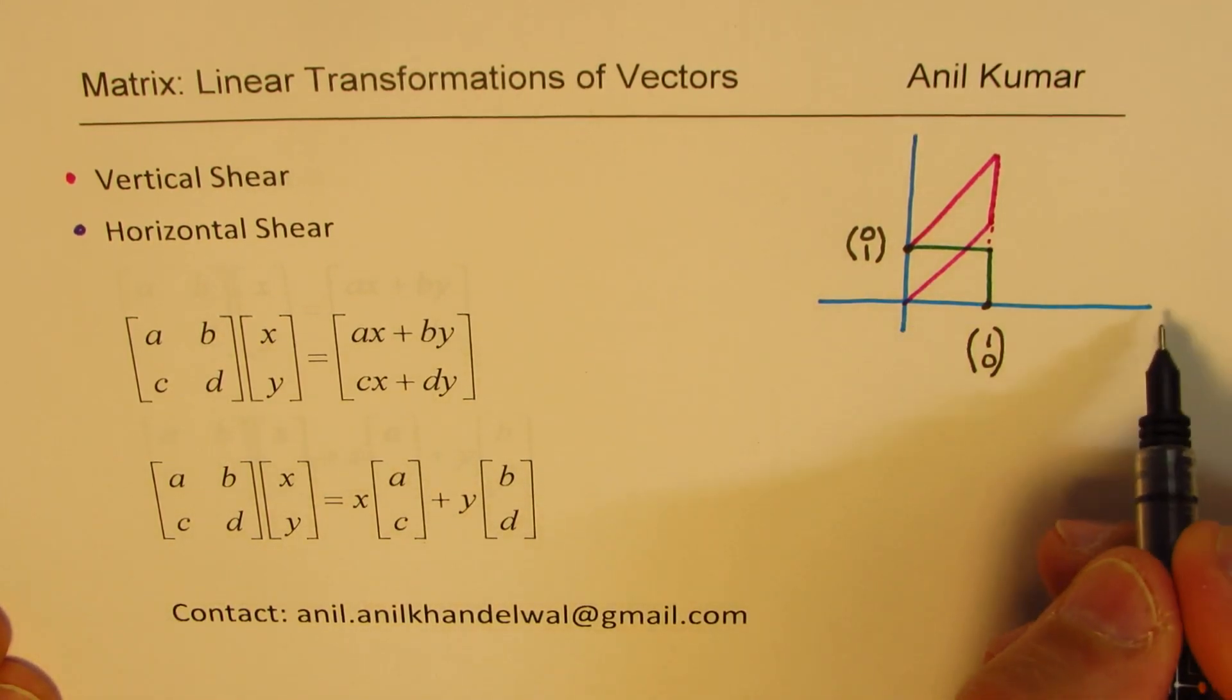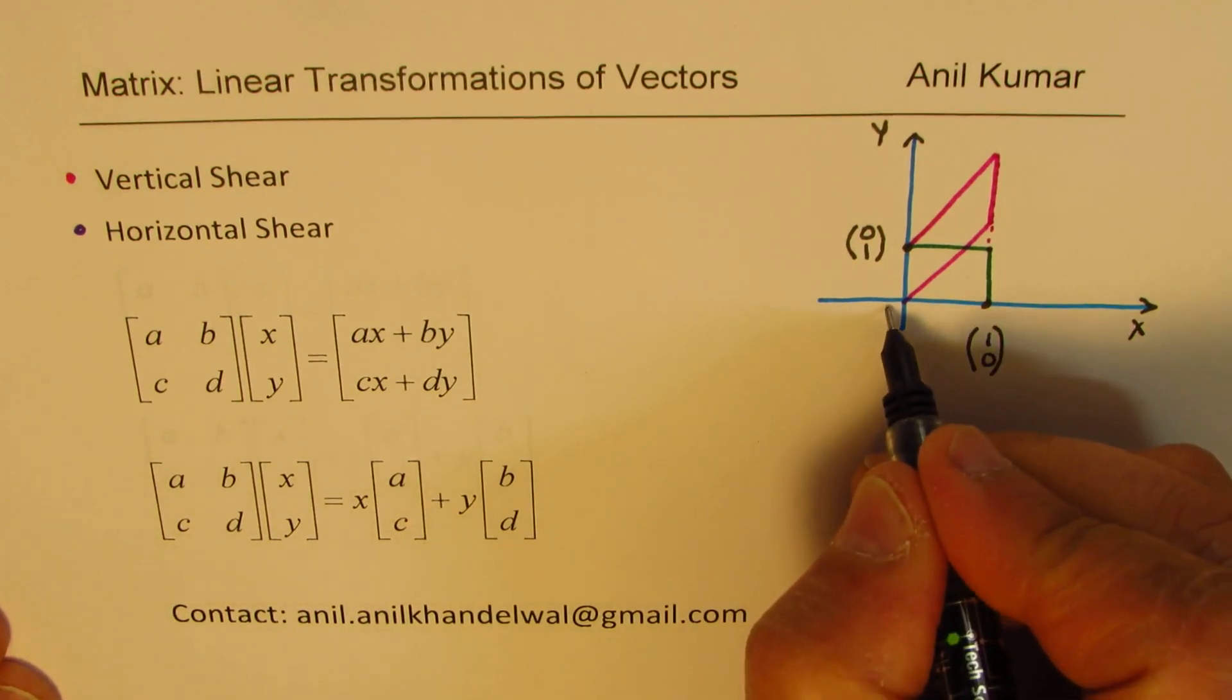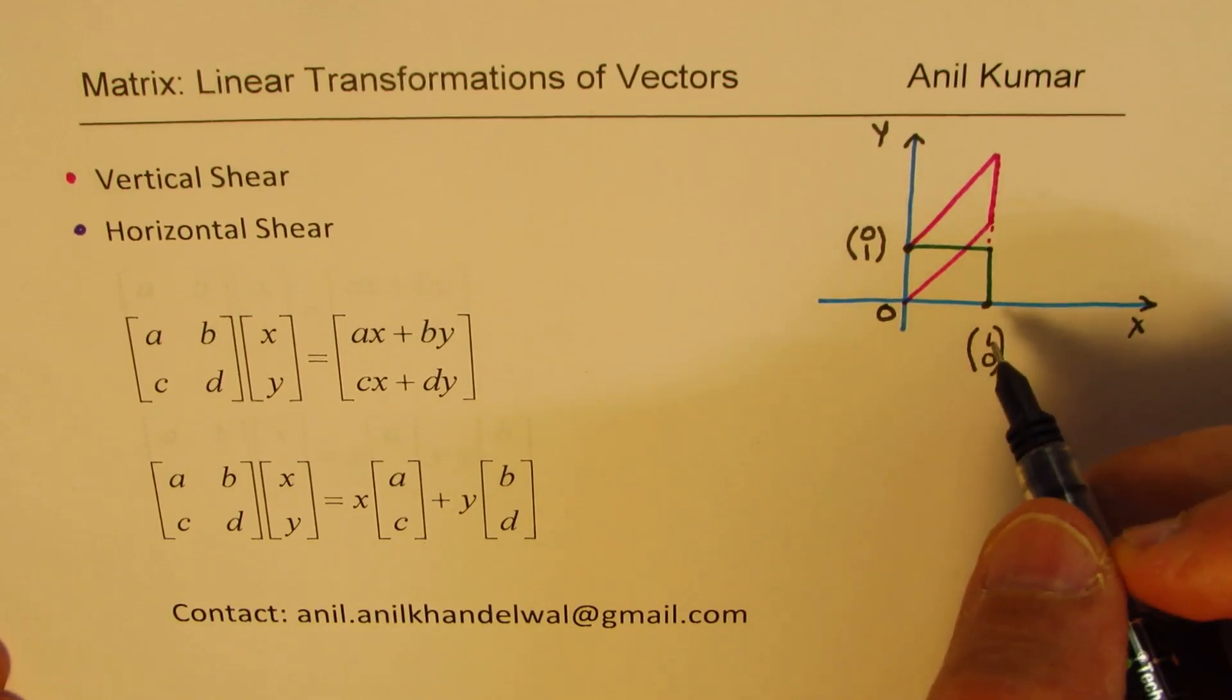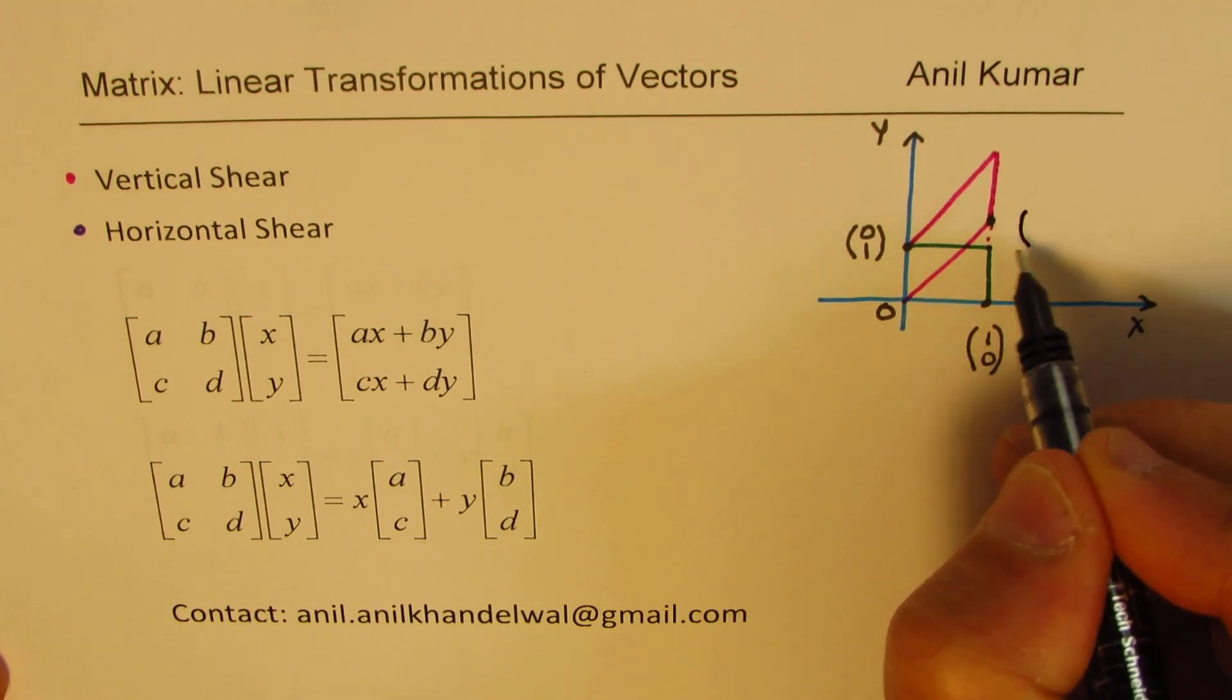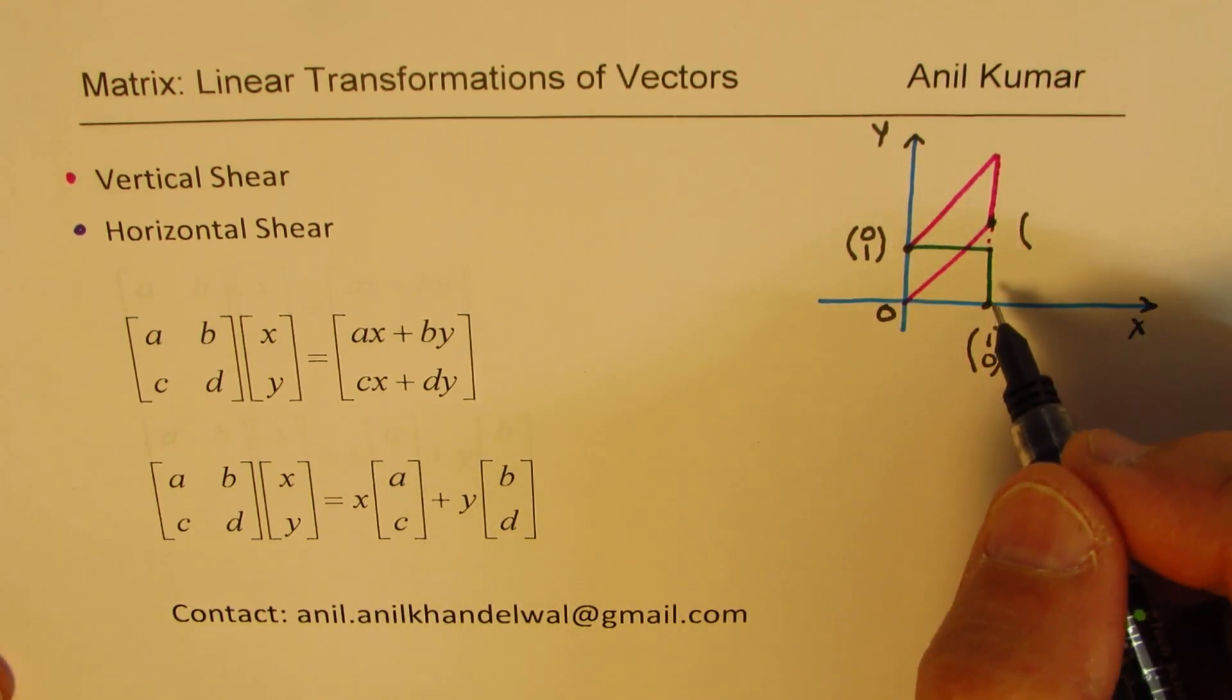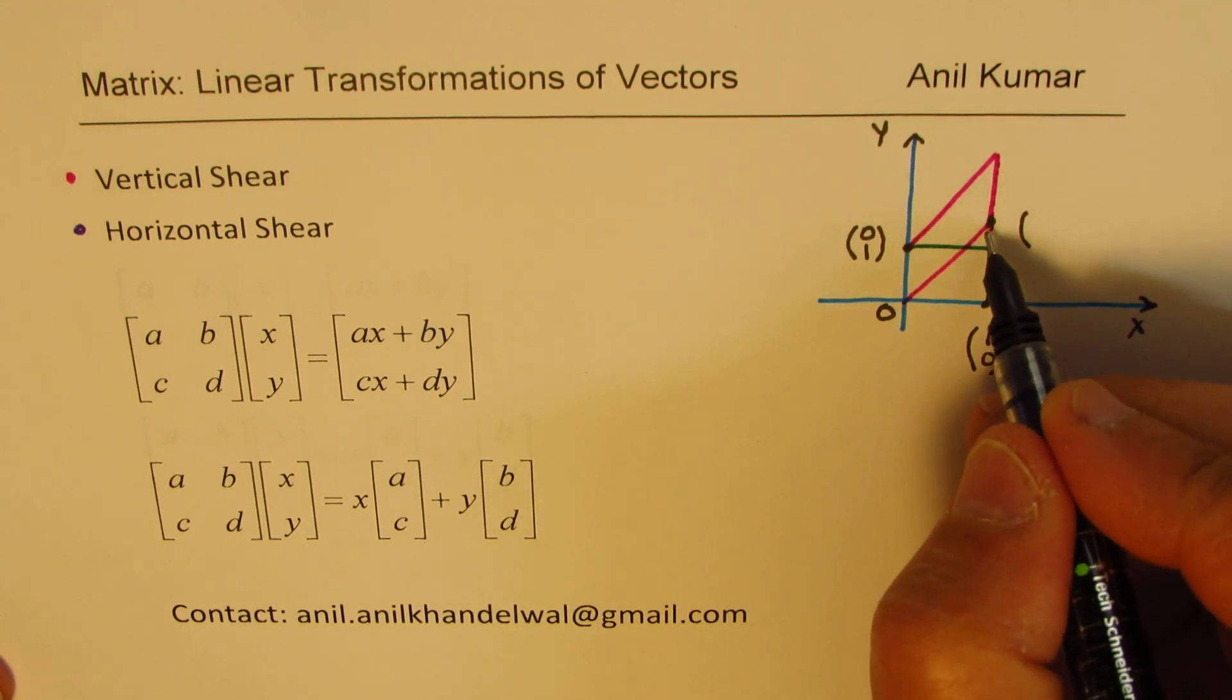Now the idea here is how do we get a transformation matrix which can perform such an operation? So linear transformations, zero will remain at zero. So when this operation is performed, if we notice that this particular point here is still at x value of 1. However, the y value has increased. So let us assume this value to be 2. So I could write this point as 1,2.